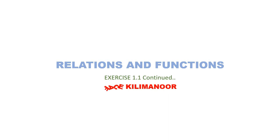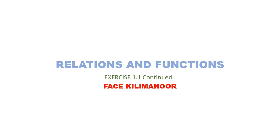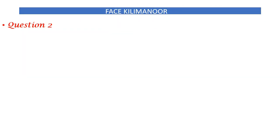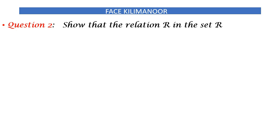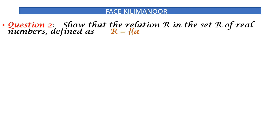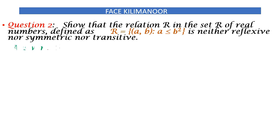Welcome to the YouTube channel. In Relations and Functions, Chapter 1, Exercise 1.2, we continue. Show that the relation R in the set of real numbers defined as R = {(a,b) : a ≤ b²} is neither reflexive nor symmetric nor transitive.